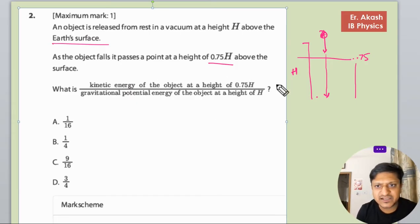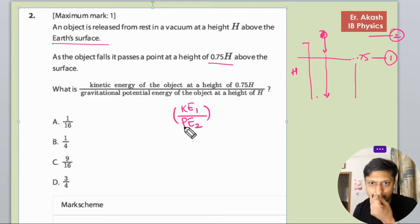The kinetic energy at this level, this is the one level and this is the second level for your understanding. Basically the question is asking for the kinetic energy at one level and potential energy at the second. This we have to find out.